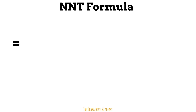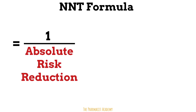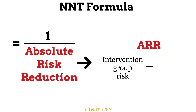The formula to calculate the number needed to treat is one over the absolute risk reduction. By definition, the absolute risk reduction refers to the actual difference in risk between the treated and the control group. Let's take a look at the following example to help make this definition clearer.